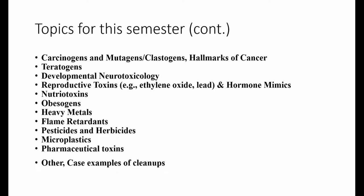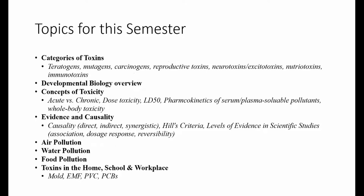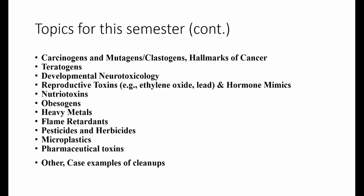The course is structured with two passes over the information: first air pollution, water pollution, food pollution, an introduction to categories of toxins, concepts of toxicity, and evidence of causality; then a detailed pass through specific categories — carcinogens, immunogens, clastogens, hormones of cancer, teratogens, developmental neurotoxicity, neurotoxicology, reproductive toxins, ethylene oxide and lead, hormone mimics, nutriotoxins, obesogens, heavy metals, flame retardants, pesticides and herbicides, microplastics, and pharmaceutical toxins. The course knowledge structure is cumulative — what you learn early on you'll apply to your understanding of specific individual toxins.